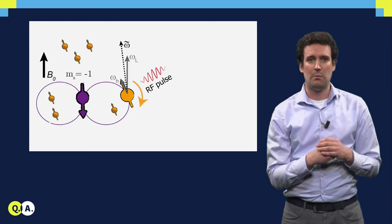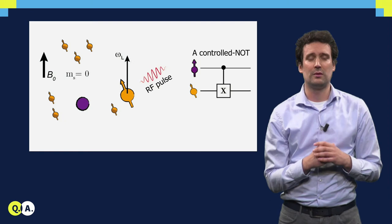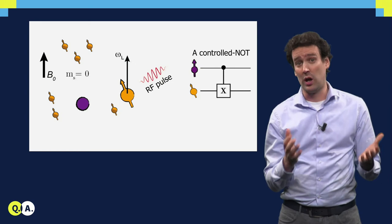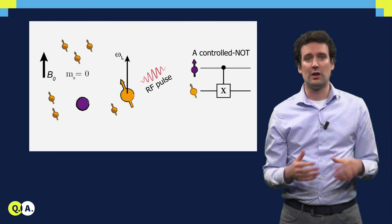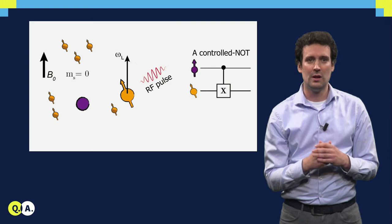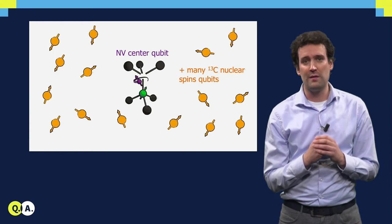Moreover, if we flip the electron to its zero state, it does not create a magnetic field, so the same RF pulse will have no effect on the nuclear spin. The evolution of the nuclear spin thus depends on the state of the electron spin — it rotates if the electron spin is in state 1, but it does not rotate for state 0. This means we have constructed a controlled quantum gate between the electron and the nuclear spin, and that is exactly what we need for quantum computations. This enables us to control multiple nuclear spins near a single NV center, and each NV center becomes a system of five or even more qubits.